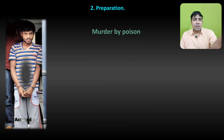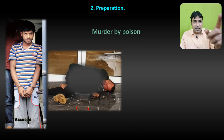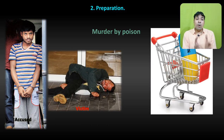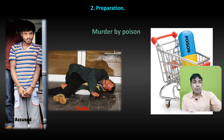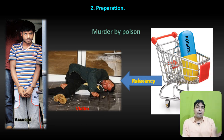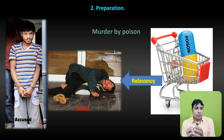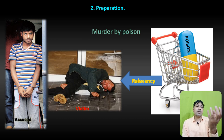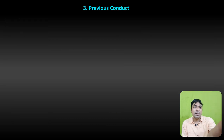Murder by poisoning: yahan par accused pe charges the ke usne victim ko poison dekar mara. Accused has purchased a certain poison from a particular store — that becomes relevant. Accused pe charges hain ke usne victim ko poison dekar usko mara — aap joh usne poison kharida jis dukaan se, that becomes preparation, and that becomes relevant under Section 8.